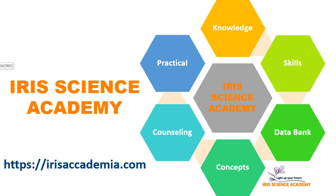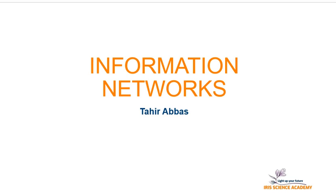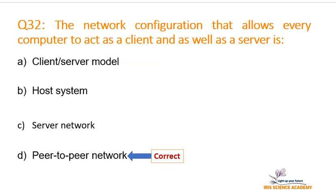In this video, we will discuss First Year Chapter 2, Information Networks. Our question is: the network configuration that allows every computer to act as a client as well as a server is? We have different network models in which devices are configured and connected in different manners and have different responsibilities to perform as per their structure.